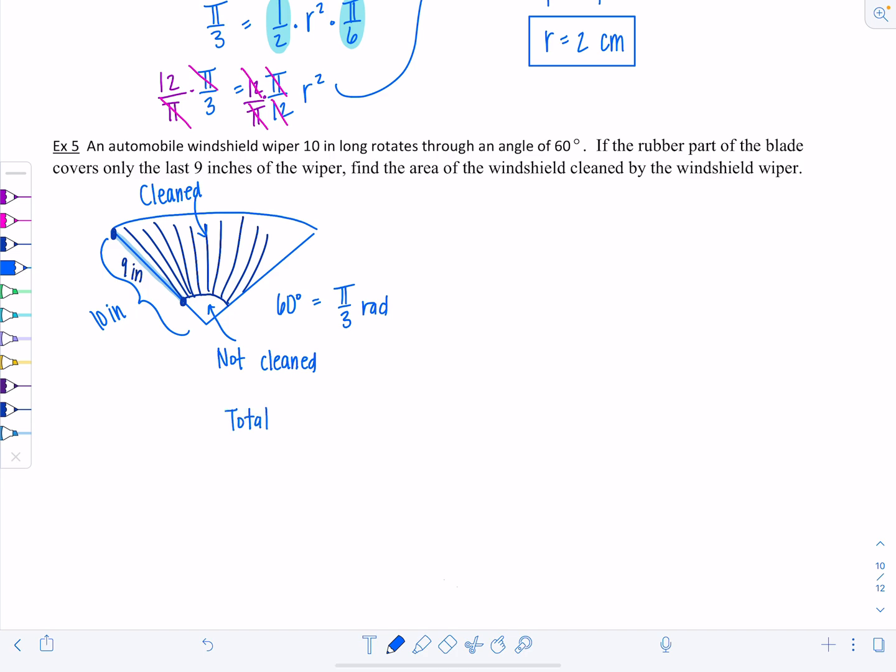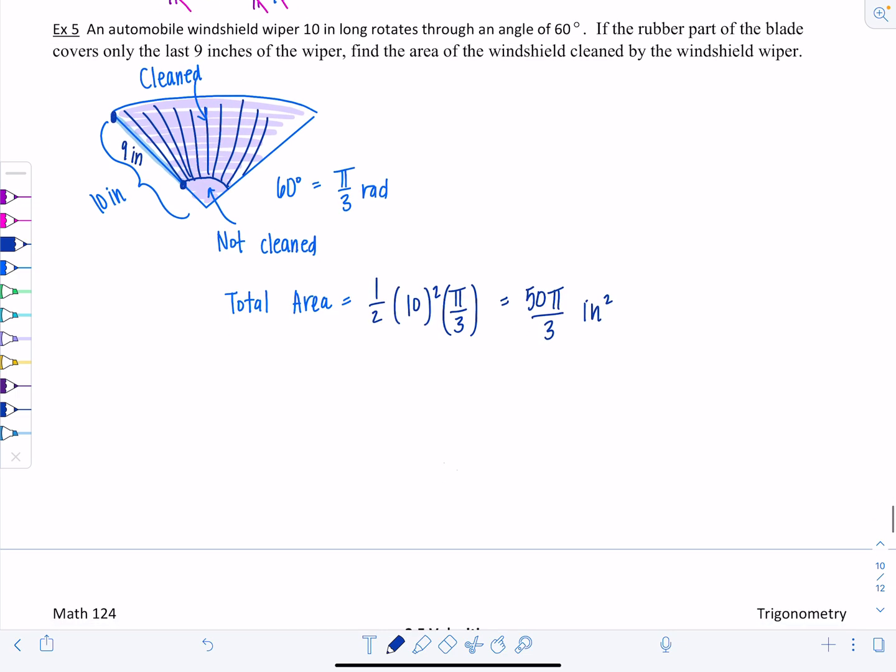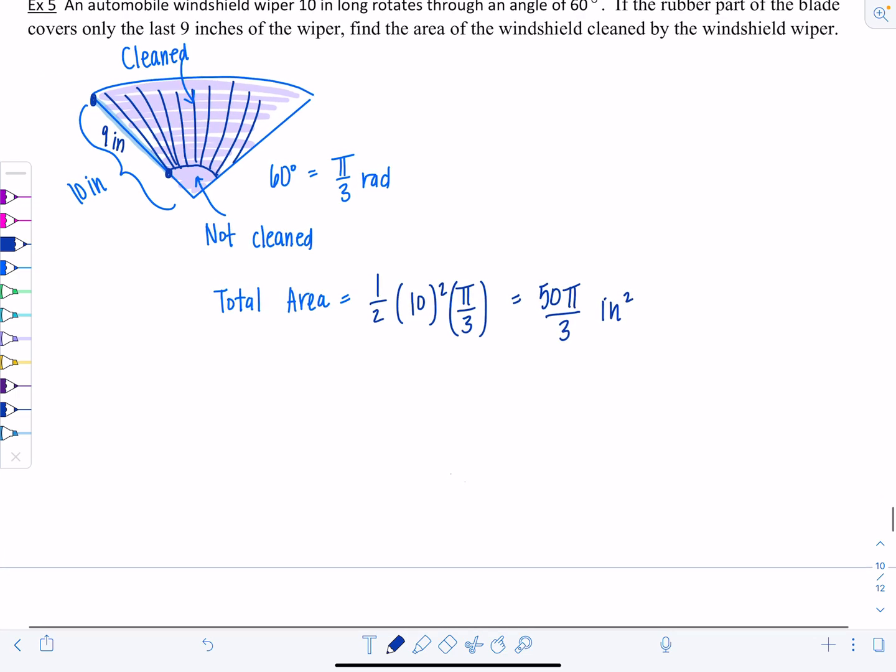The total area, the entire windshield, cleaned and not cleaned all together. The total area, I'm going to use one-half r squared theta. So one-half, the full radius would be 10 squared times theta, which is π over 3. 10 squared, that's 100, divided by 2 is 50. This is 50π over 3 inches squared. That's the total area. Now they want the area that's cleaned. I'm going to subtract how much is not cleaned. Let's figure out how much is not cleaned. When I say not cleaned, I mean this little portion down here that the windshield wiper's rubber portion is not hitting, not cleaning.